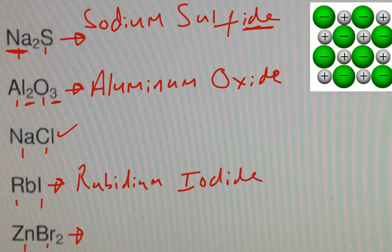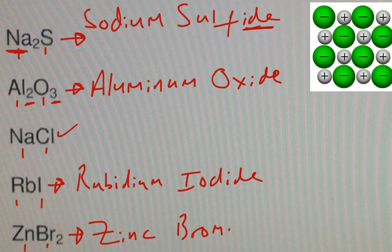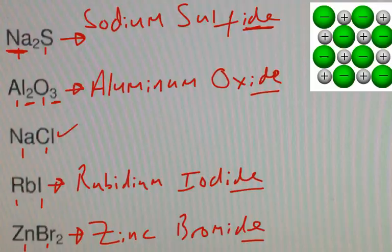And the last one would be zinc bromide. So once again, the metal ion stays as is, and the negative non-metal ion gets an ide ending.